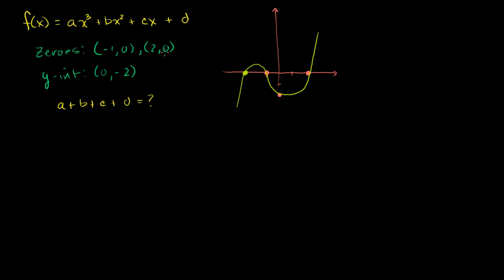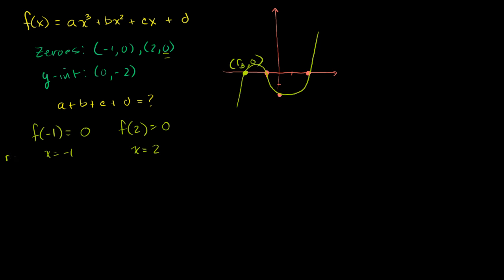There must be a third zero, so let's call that third zero at the point (r3, 0) — I'm using the letter r for roots. Roots are the x-values of the zeros. So f(-1) = 0 means x = -1 is a root; f(2) = 0 means x = 2 is a root. And there must be a third root at x = r3.